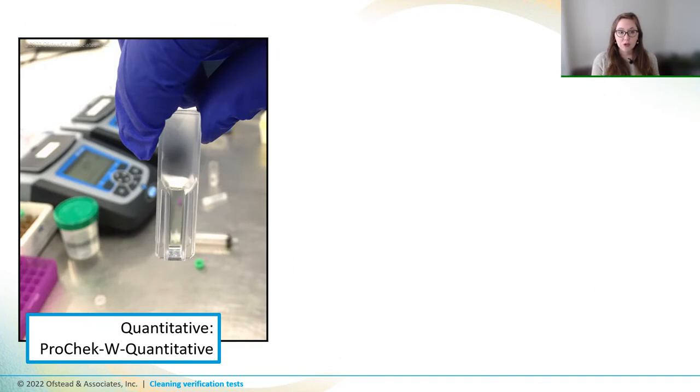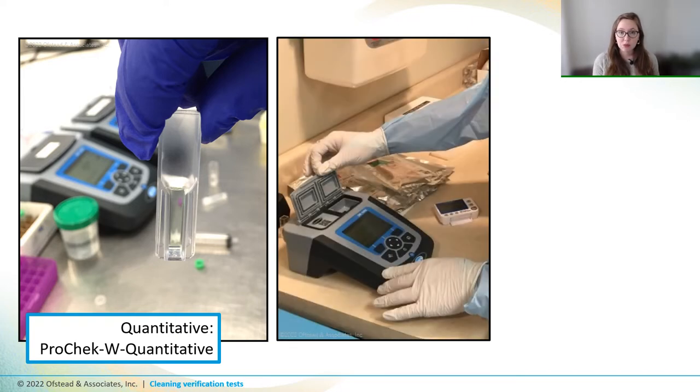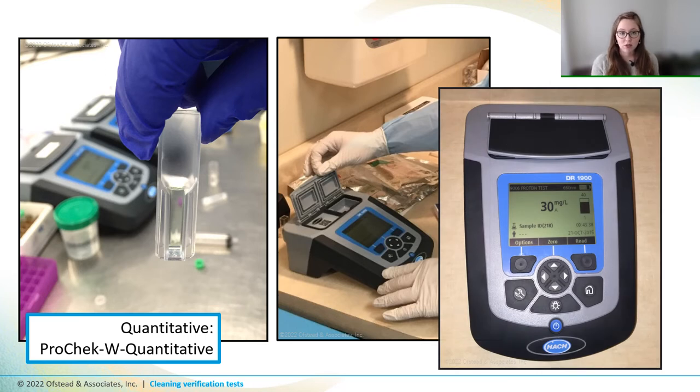Luckily, you can also read ProCheck test files with the spectrophotometer, and this is what we've done during our research studies. So once the sample was prepared, we just popped it into the machine and it produced a numeric or a quantitative result that is read in micrograms per milliliter. Now we love these quantitative machines for research because we really like getting that number. But color charts are likely more than sufficient for day-to-day use.